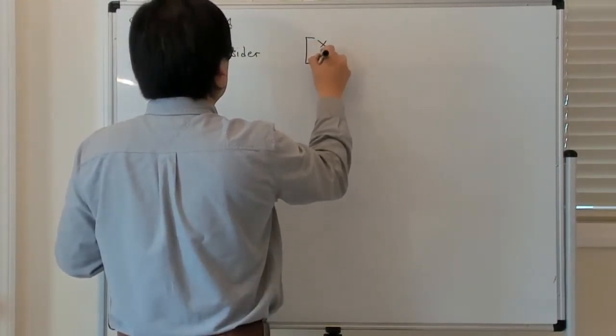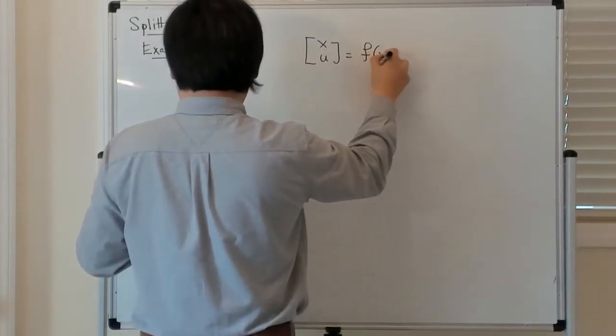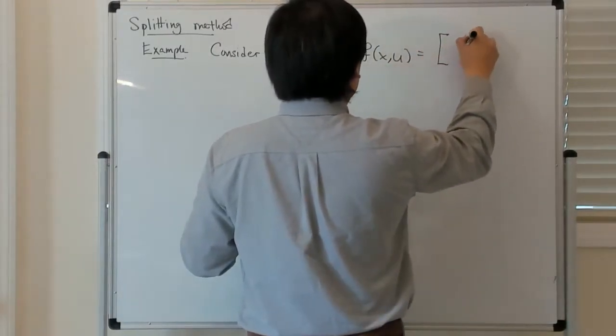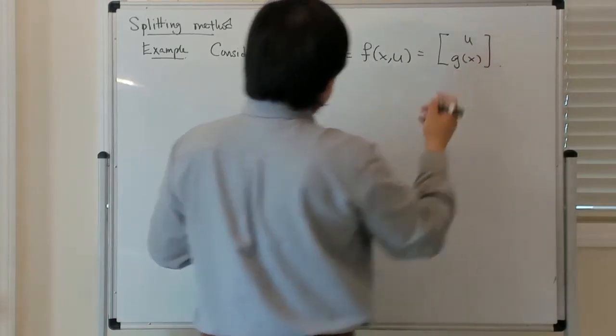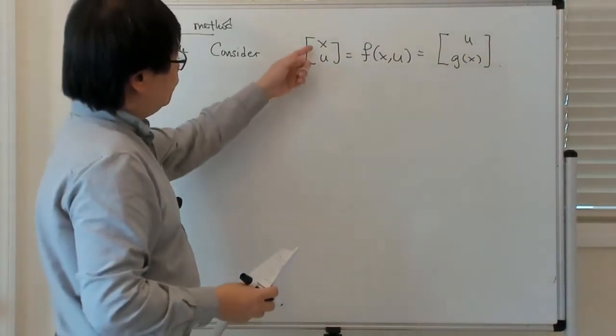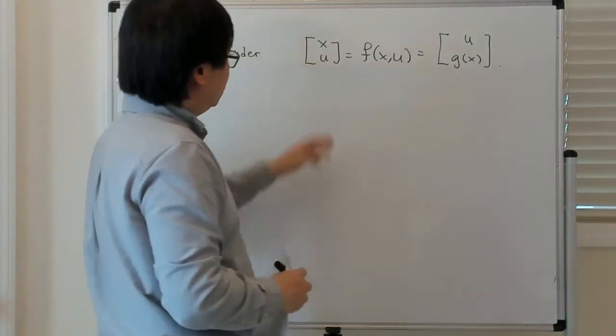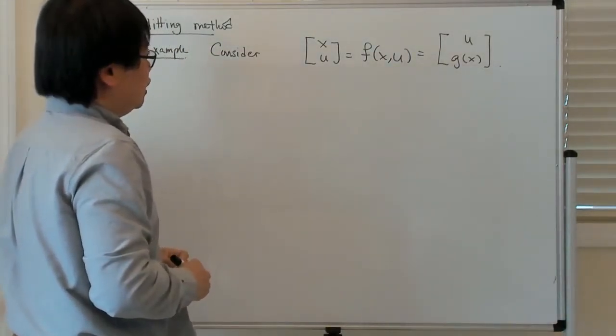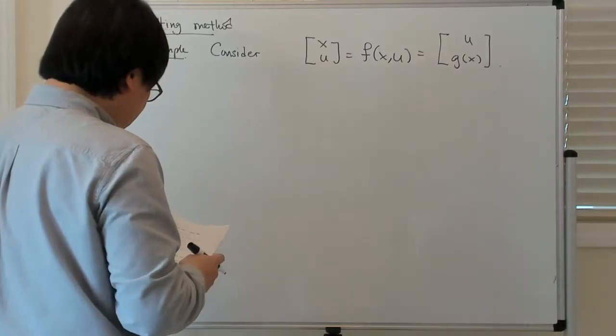Basically, x dot u is equal to f of x and u with the following decomposition: u and g of x. So as an example, if x was position and u was velocity or momentum, then you would have something which looks very similar to this in the context of a mechanical system.